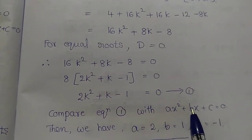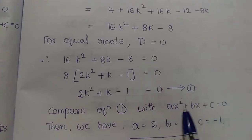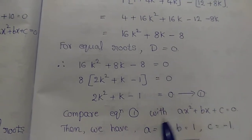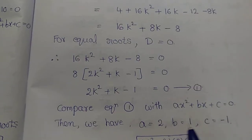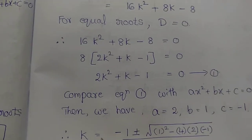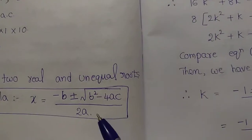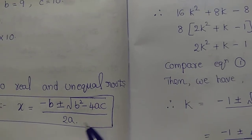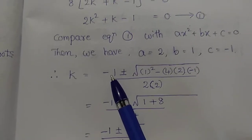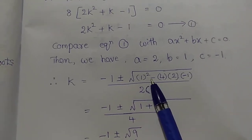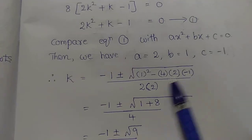Compare equation 1 with ax squared plus bx plus c equals 0. We get a equals 2, b equals 1, c equals minus 1. Applying the quadratic formula: x equals minus b plus or minus under root b squared minus 4ac by 2a.